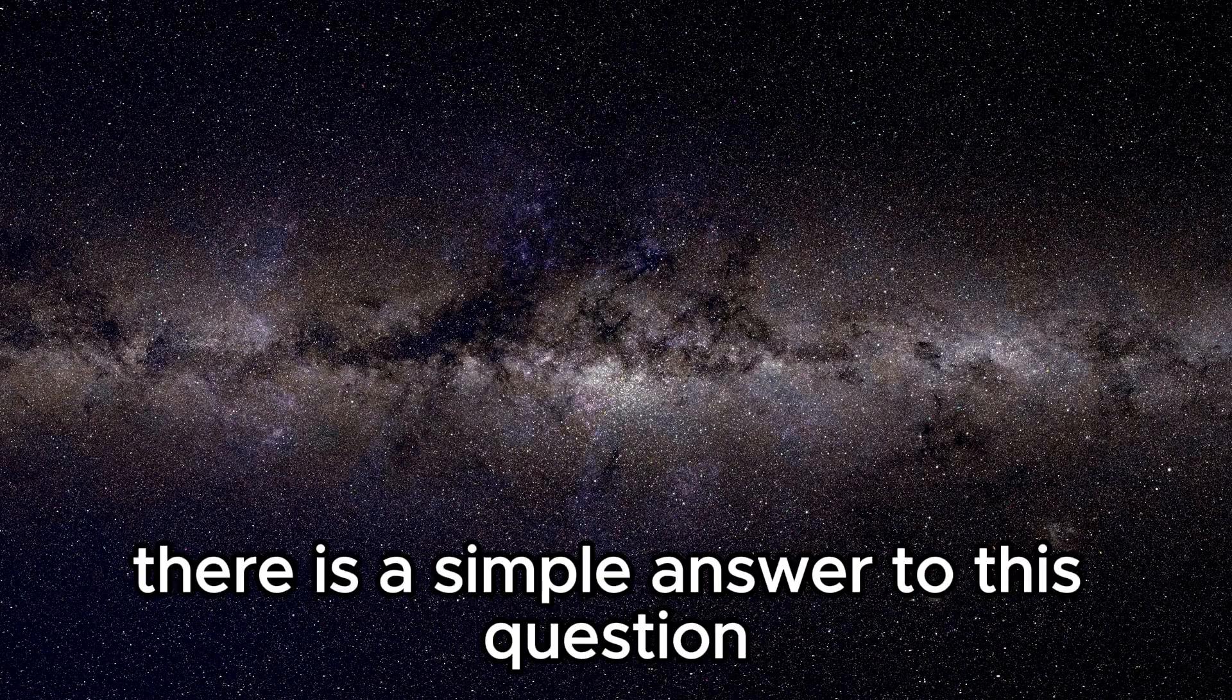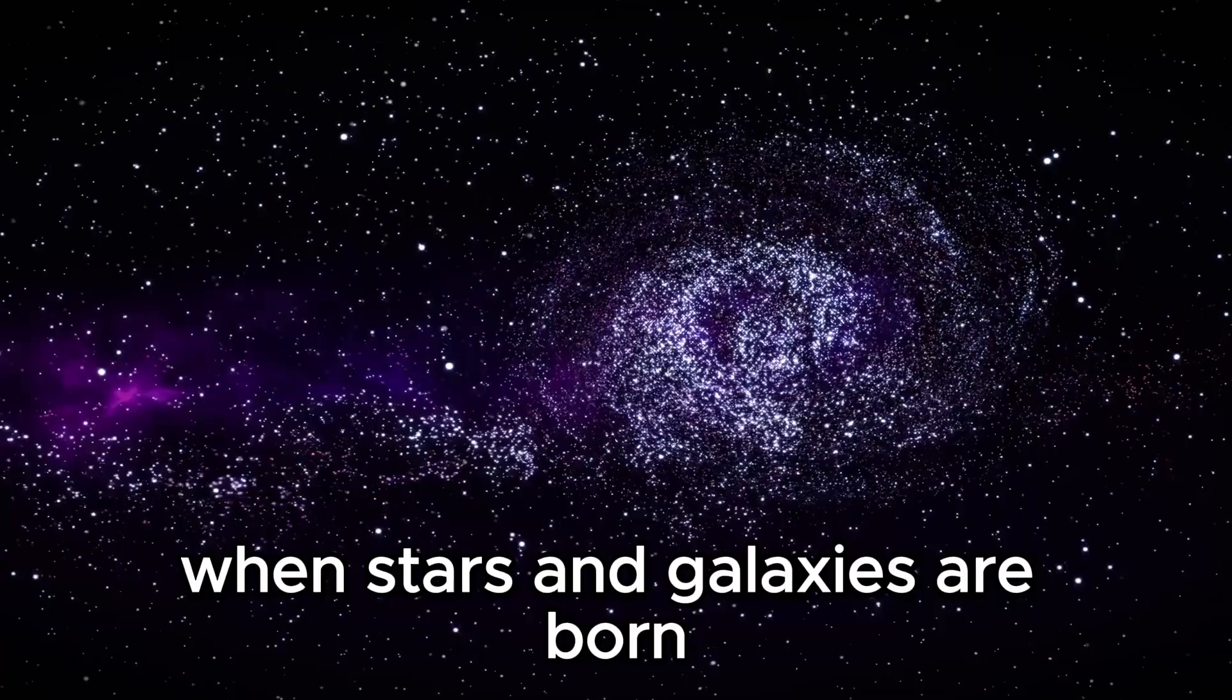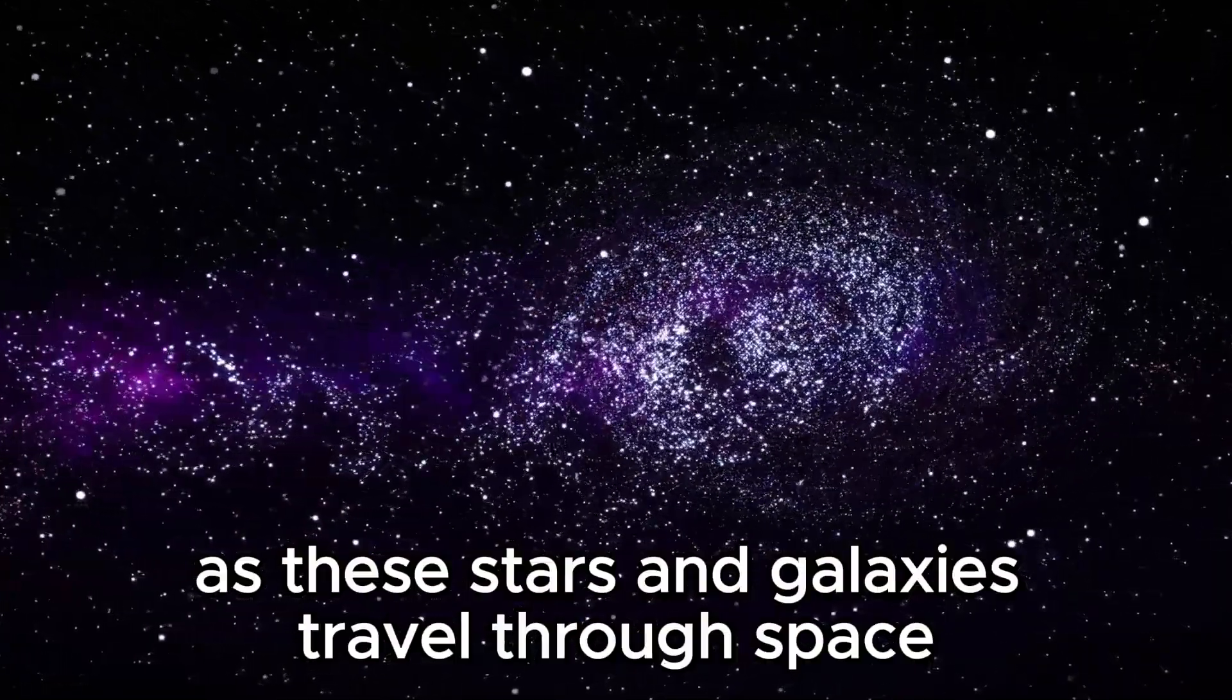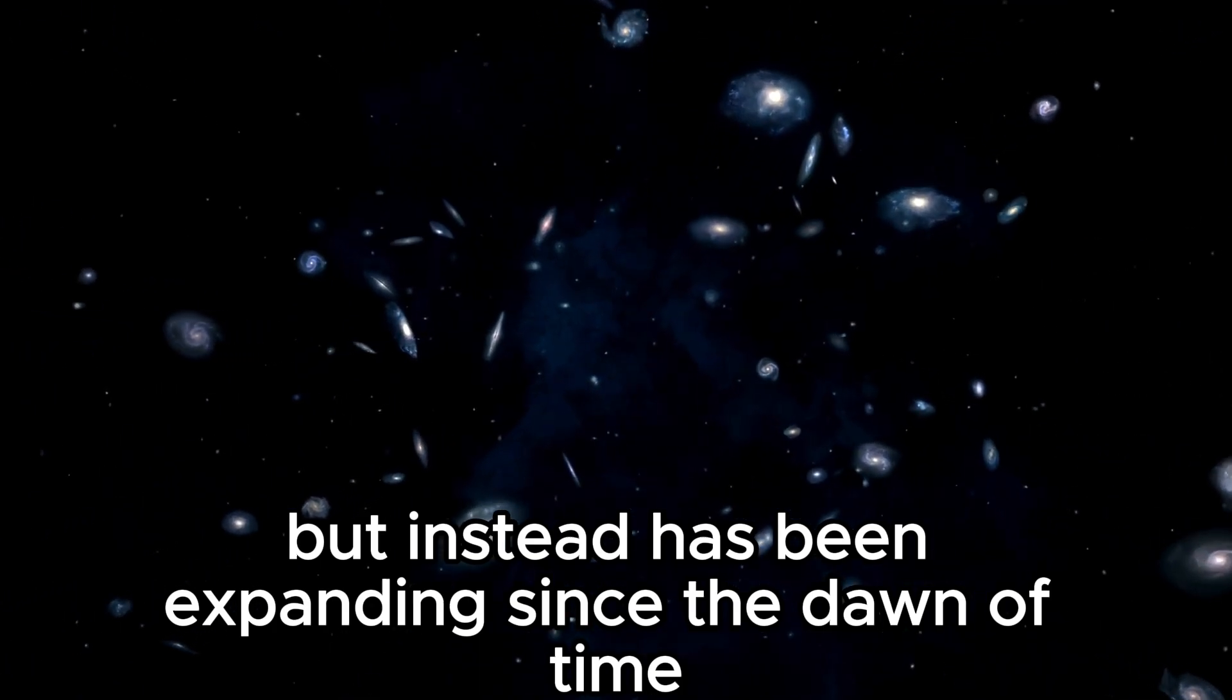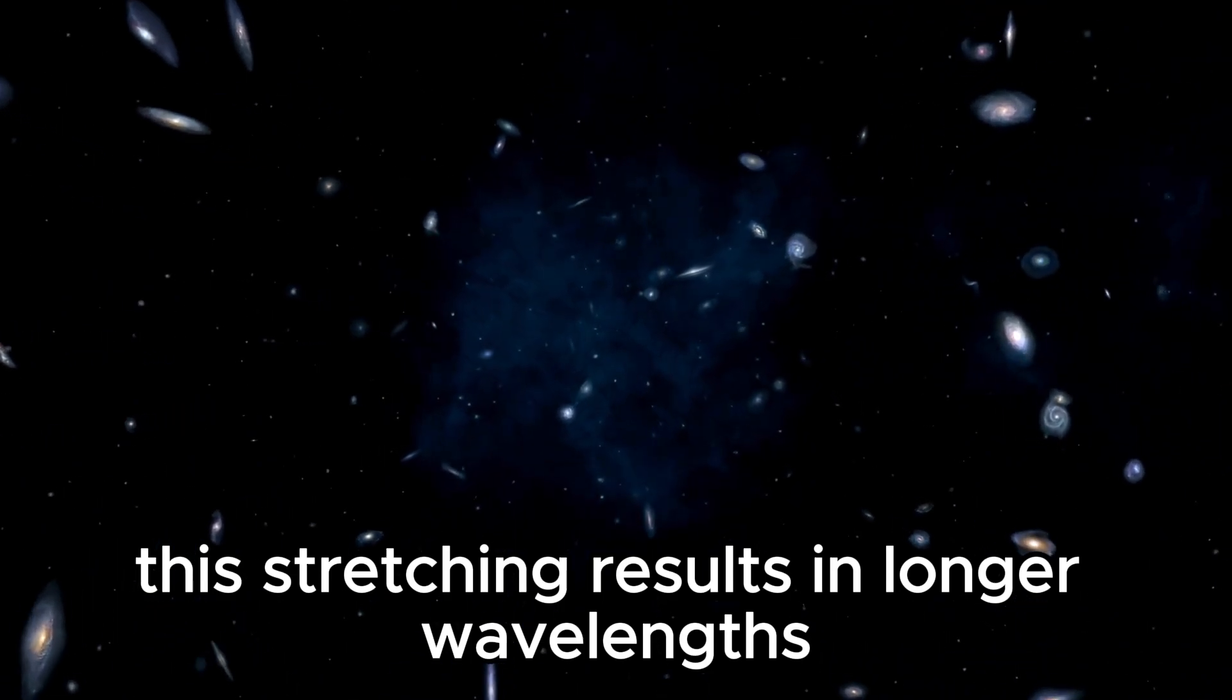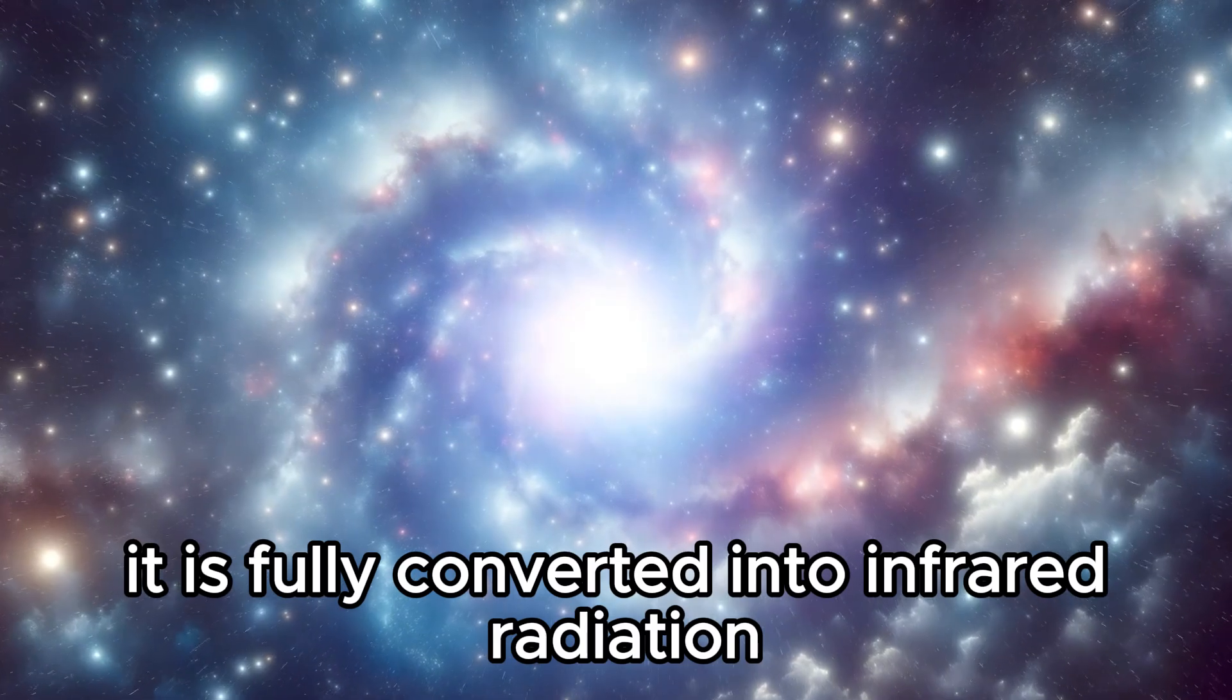Why is this so? There is a simple answer to this question. When stars and galaxies are born, they emit radiation in the form of ultraviolet light. As these stars and galaxies travel through space, a place that is not static but instead has been expanding since the dawn of time, the light waves that were emitted end up stretching. This stretching results in longer wavelengths, and by the time the light reaches our planet, it is fully converted into infrared radiation.